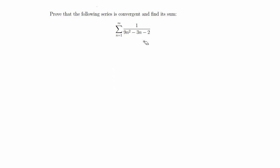This problem is an example of a telescoping series, although it might not look like it at first. Let's write Xn as the sequence that's being summed in the series. That's going to be 1 over 9n squared minus 3n minus 2.